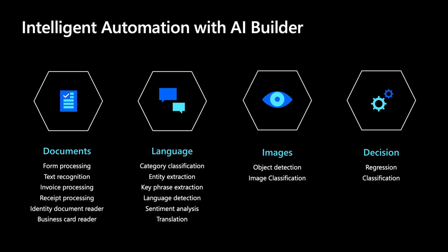The second category of scenarios that we support is Language, which allows you to translate, transform, and extract key information or sentiment from unstructured text. The third category is Images, to detect objects in images and classify them. And the fourth category is Decision, to predict new values in structured data that are based off of historical outcomes.